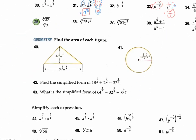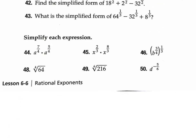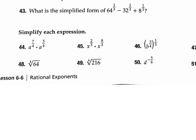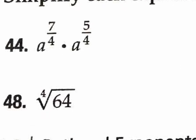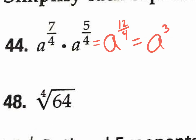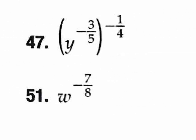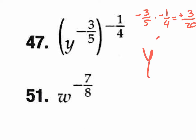For problems 44 through 47: number 44, multiplying with the same base — add the exponents: 7/4 plus 5/4 is 12/4, which simplifies to a to the 3rd power. For number 47, it's a power to a power — multiply. You have negative 3/5 times negative 1/4. Negative times negative equals positive. 3 times 1 is 3, 5 times 4 is 20. The answer is y to the 3/20.